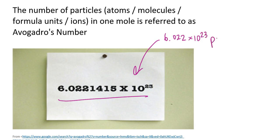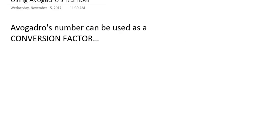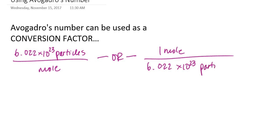That means there are 6.022 times 10 to the 23rd particles in one mole — and by particles, I mean either atoms, molecules, formula units, or ions. If you look at the units for Avogadro's number, you'll see they are in the form of a ratio. We can use Avogadro's number as a conversion factor: either as 6.022 times 10 to the 23rd particles per mole, or as 1 mole per 6.022 times 10 to the 23rd particles.